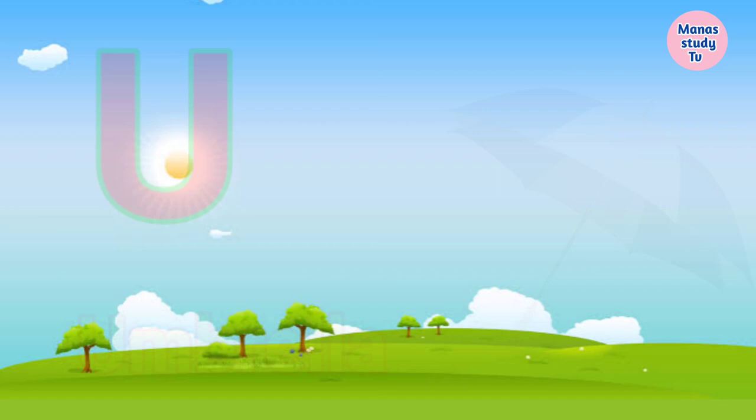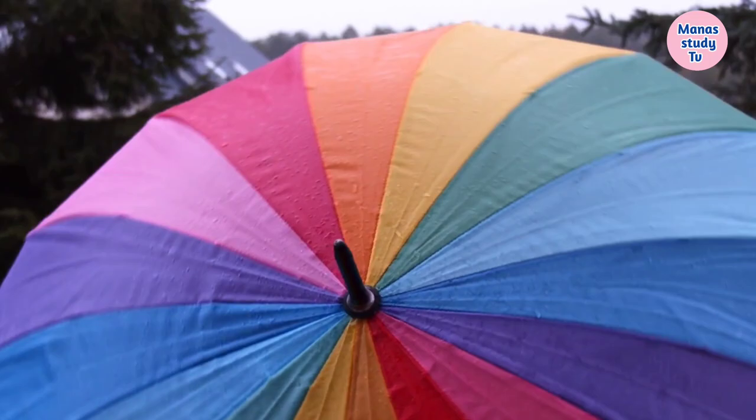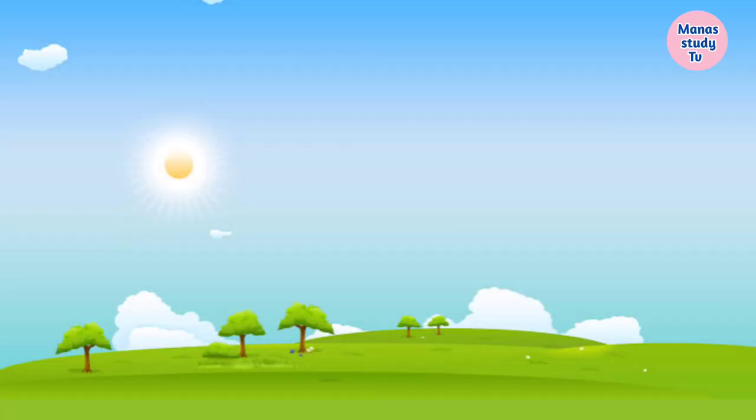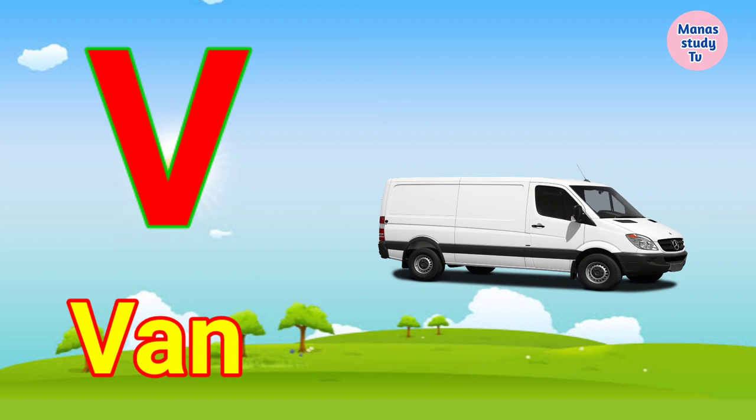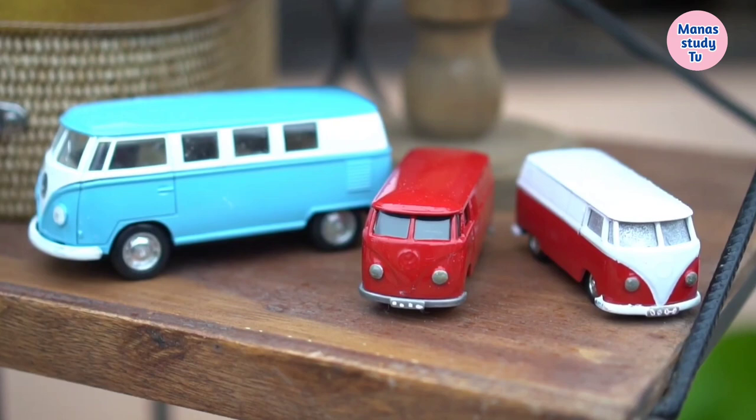U. U for Umbrella. Umbrella means Chata. V. V for Van. Van means Gaari.